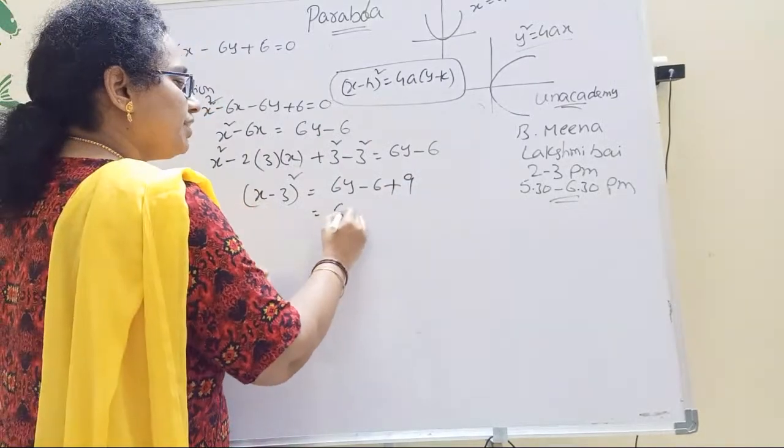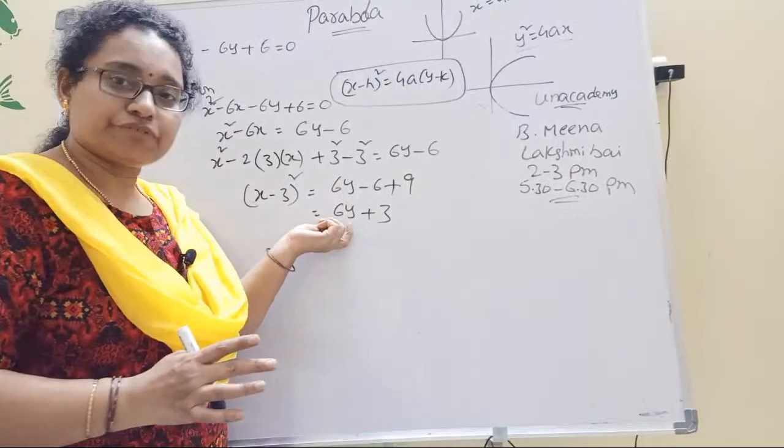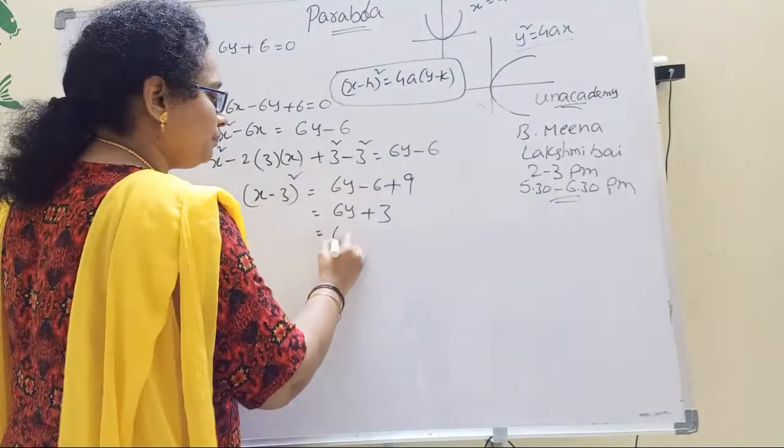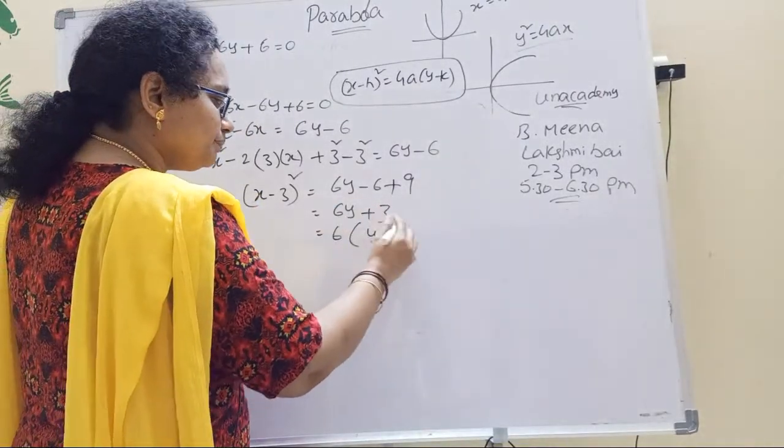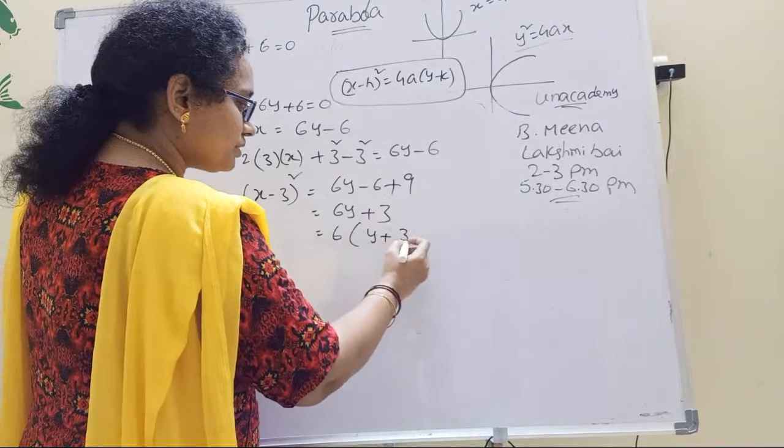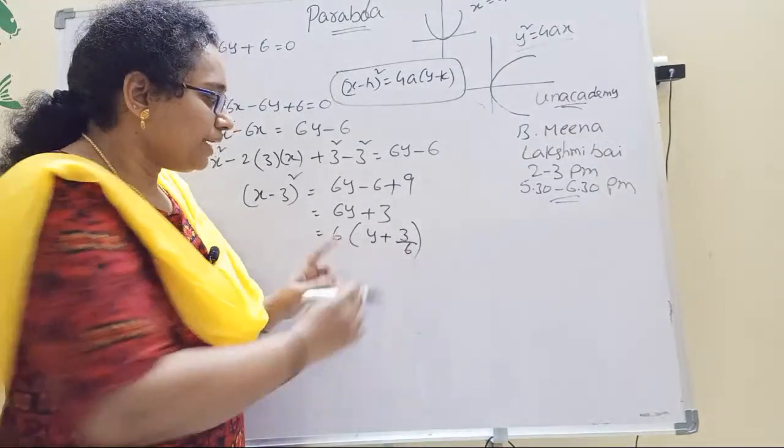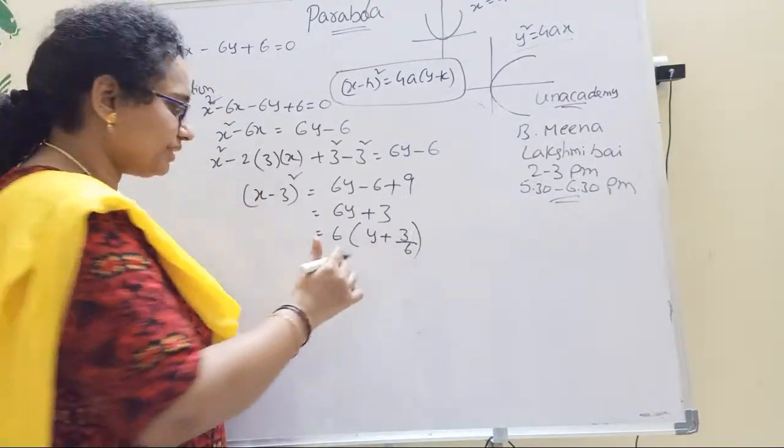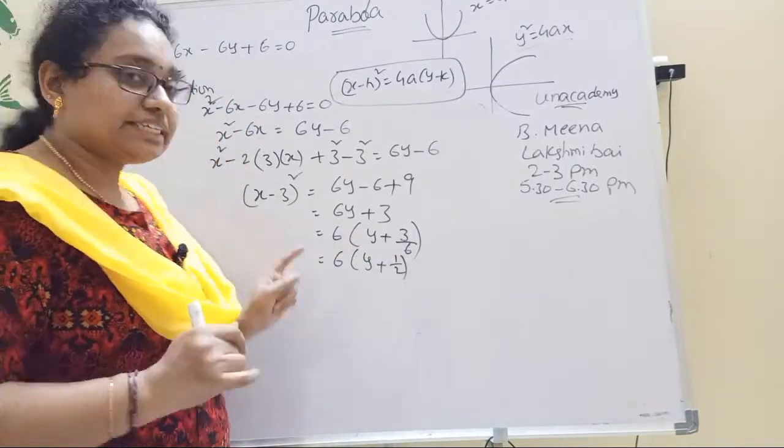Next, minus 3 squared right hand side: 6y minus 6 plus 9. We can see the y coefficient. Take 6 common: 6 times y plus, if 9 minus 6 equals 3, 3 divided by 6 is 1 by 2. So 6 of y plus 1 by 2.